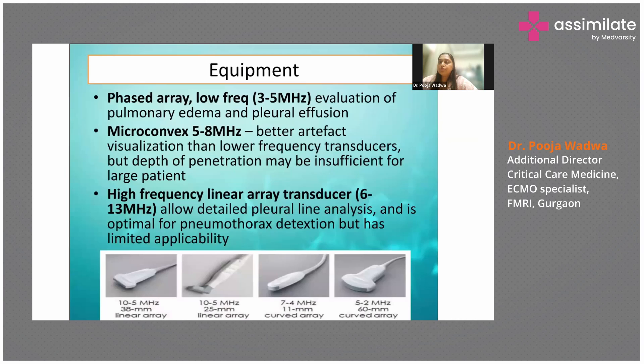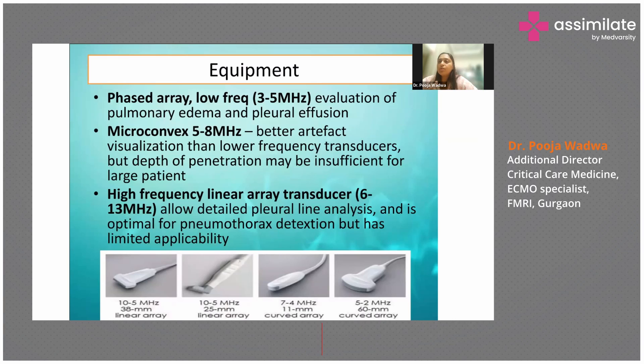We have three probes: the linear ones and the curved ones. We have low frequency, which is 3 to 5 megahertz, microconvex is 5 to 8, and high frequency which is 6 to 13 megahertz, which is mostly suitable for pleural line analysis and pneumothorax.